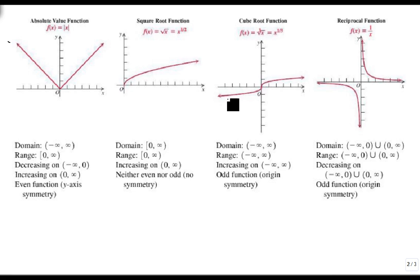A cube root looks similar, but it's got that other tail, and it goes over faster than it goes up or down. It has a minus infinity to infinity domain, minus infinity to infinity range, and it's always increasing from minus infinity to infinity, and it's an odd function.